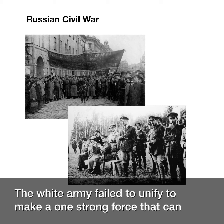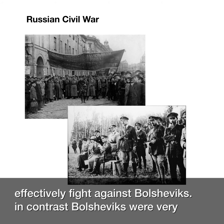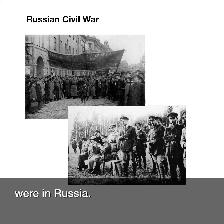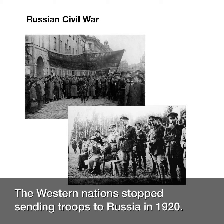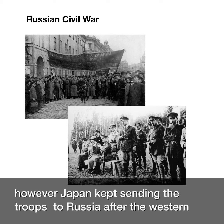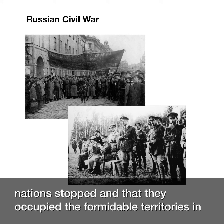The White Army failed to unify into one strong force that could effectively fight the Bolsheviks. In contrast, the Bolsheviks were a very strong, unified force. The White Army couldn't even coordinate with the allied forces inside Russia. Western nations stopped sending troops to Russia in 1920, but continued to send weapons to the White Army for a few years. However, Japan kept sending troops after the Western nations stopped and occupied formidable territories in Siberia.